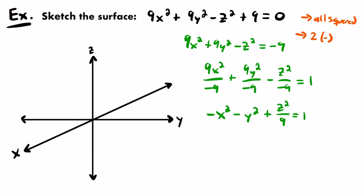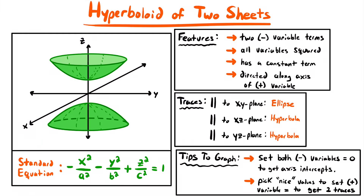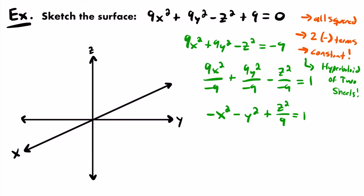We have two negative terms, which is very important — along with the constant, these three things tell us this is the equation of a hyperboloid of 2 sheets. All the variable terms are squared, two of them are negative, and we have a constant. If only one was negative and all other conditions were met, it would be a hyperboloid of 1 sheet. Since we have two negative terms, it's a hyperboloid of 2 sheets.